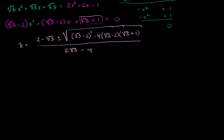I'm looking forward to the end of this problem as much as I'm guessing you are. I think we're in the home stretch — we just have to simplify this to get the possible values for x. So let's simplify what we have here in the radical. Let's say square root of 3 minus 2.